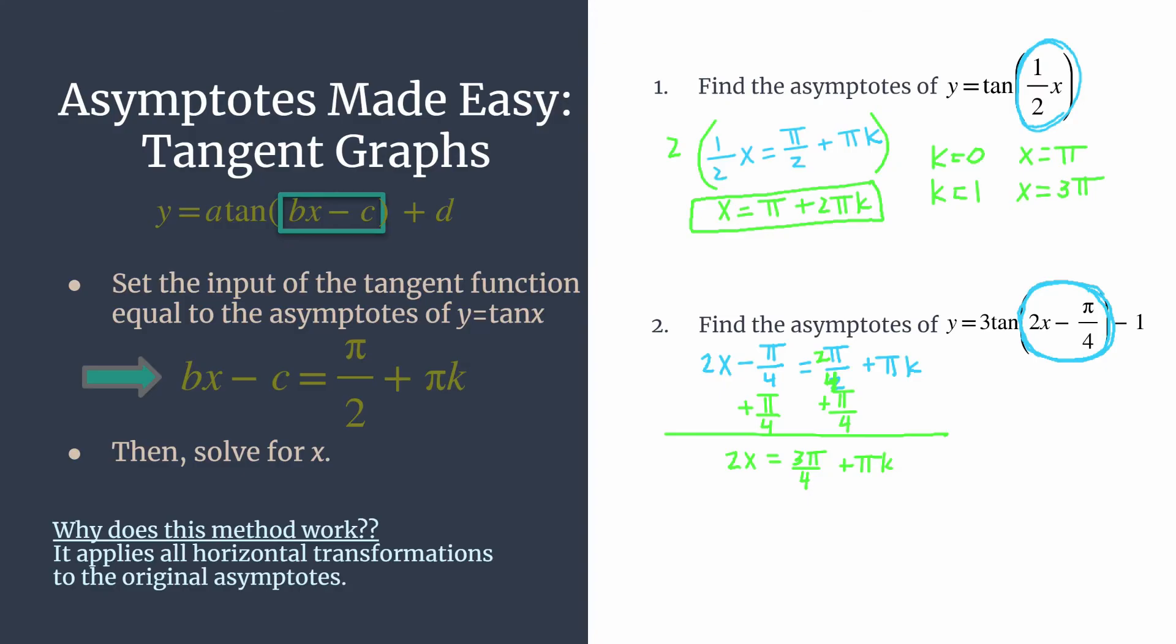Now we just need to isolate the x. Let's divide by two. We're dividing everything by two. And we end up with x equals, so three pi over four divided by two is the same thing as multiplying it by one half. And that makes it a little bit easier to look at. So we get three pi over eight plus pi over two k.